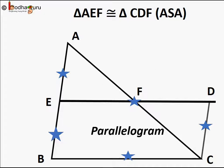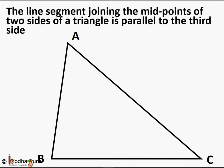So EF is parallel to BC. This means the line segment joining the midpoints of two sides of a triangle is parallel to the third side.